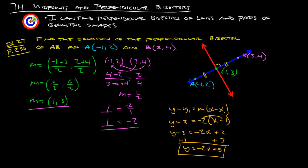That's all there is for that, so now you should be able to say that I can find perpendicular bisectors of lines and parts of geometric shapes. If you have any questions, feel free to ask. Thanks.